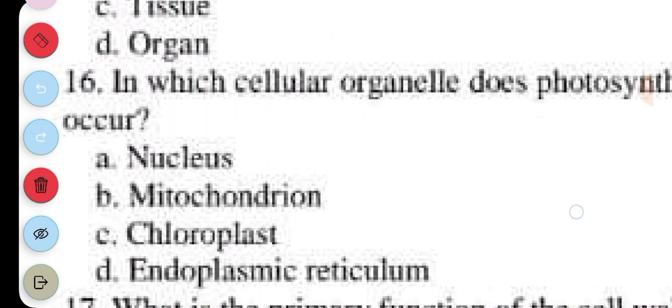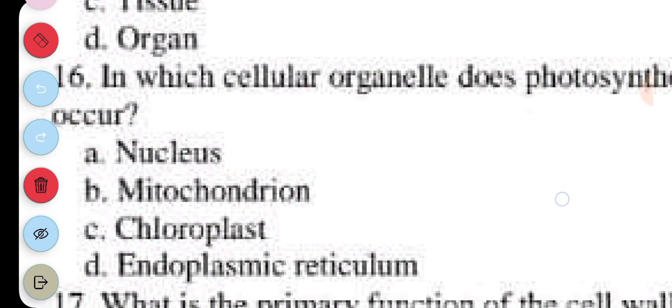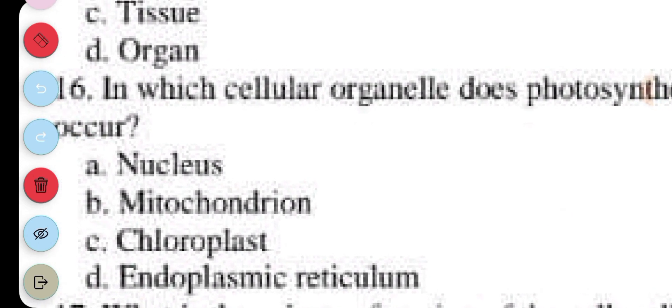Question 16. In which cellular organelle does photosynthesis occur? A. Nucleus, B. Mitochondrion, C. Chloroplast, D. Endoplasmic reticulum. Answer to question 16 is C. Chloroplast.